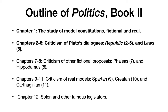After that, in chapters seven and eight, we have a criticism of other fictional proposals, including those of Fallius and Hippodomus. Then in chapters nine to eleven, a criticism of real constitutional models—actually existing constitutions—the constitutions of the Spartans, the Cretans, and the Carthaginians. Then in the final chapter, which somewhat appears like an appendix, Aristotle discusses Solon and other famous legislators.